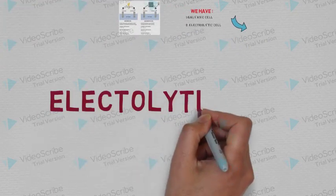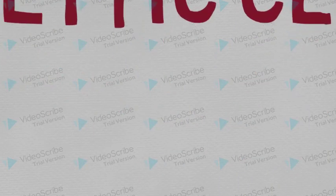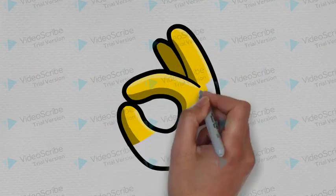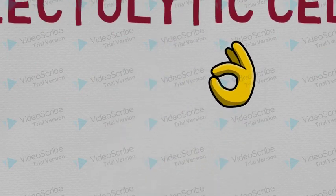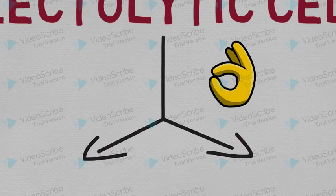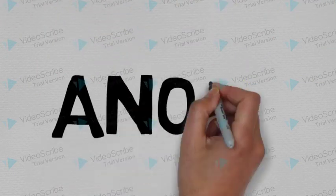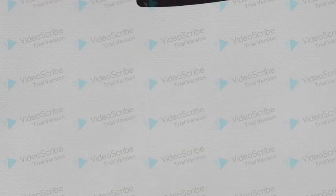So Electrolytic cell, what is it composed of? Electrolytic cell is composed of two main components, the anode and the cathode.